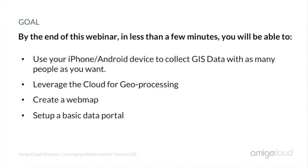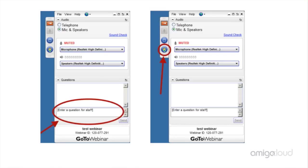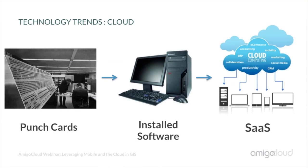We want this webinar to be interactive. We have a few ways that you can interact with us. If you look at the GoToWebinar interface, on the lower section there is a part where you can send us questions. Please feel free to type anything there and as we go through this, we'll keep an eye on it and answer those questions. All right, let's get started.